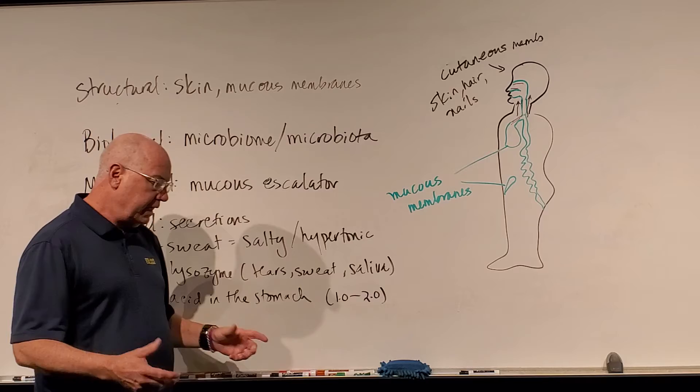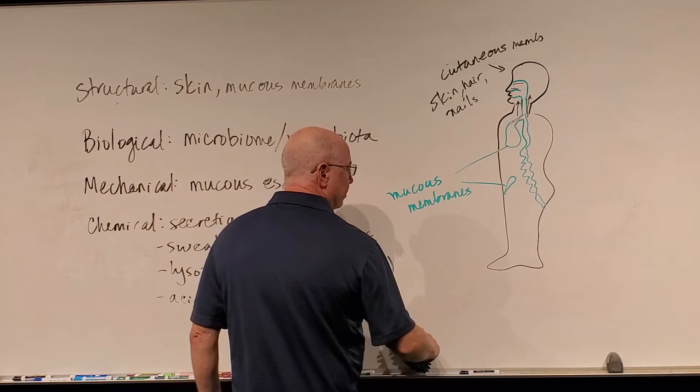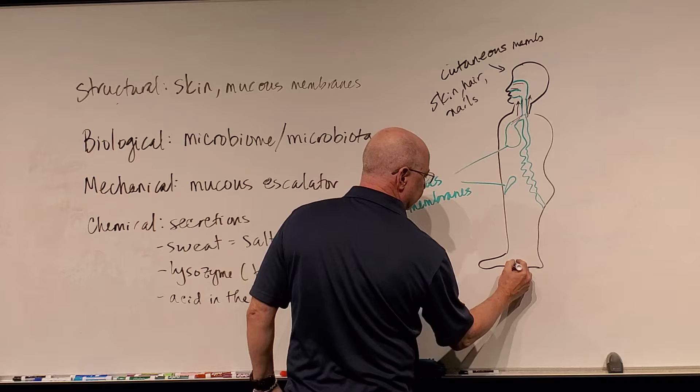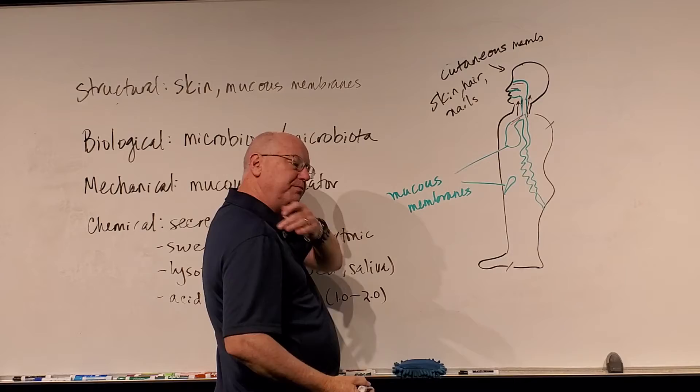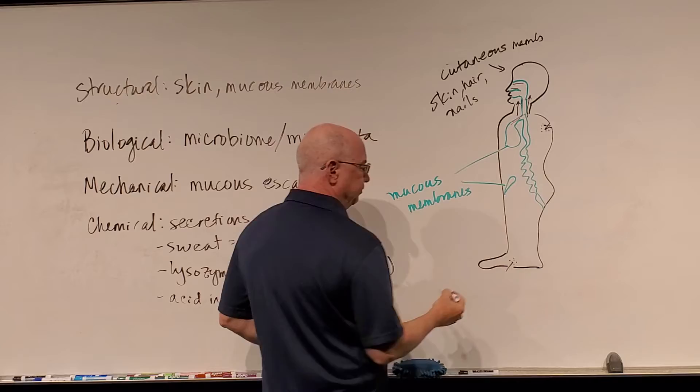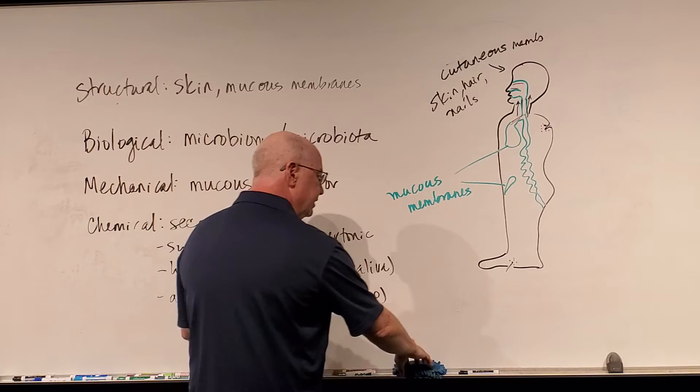Now, when we get to the actual innate immune system itself, we're going to be talking about our second line of defense: what if something actually gets into the body? Let's say you get a cut — you step on a nail, you cut your hand, you bump into something and it breaks the skin. Now we have compromised the first line of defense, and some microbes might get into the body this way. So we have to activate the second line of defense.